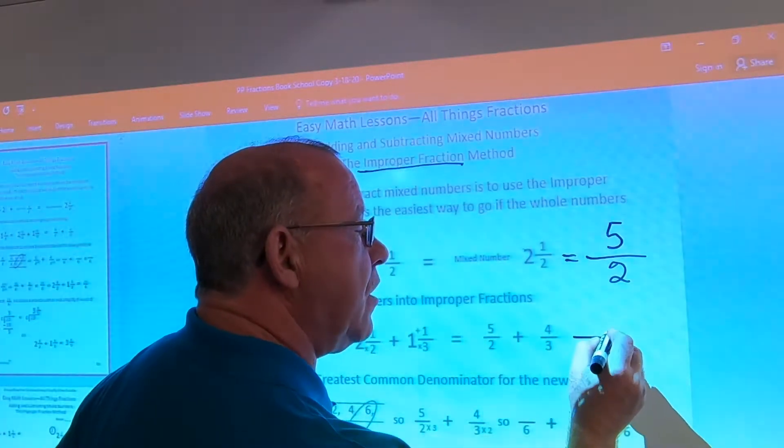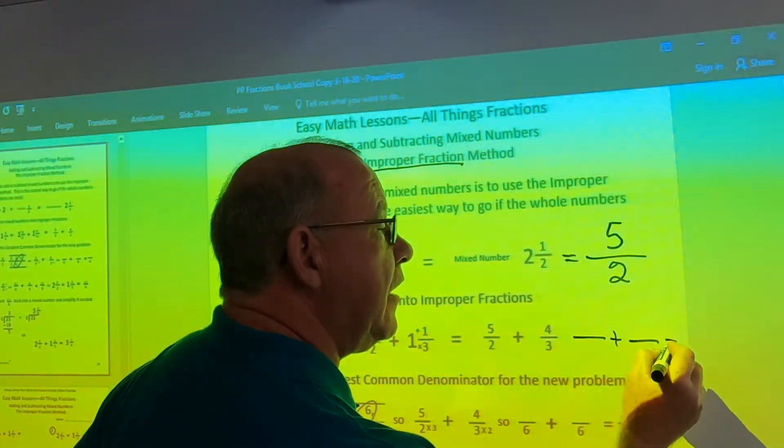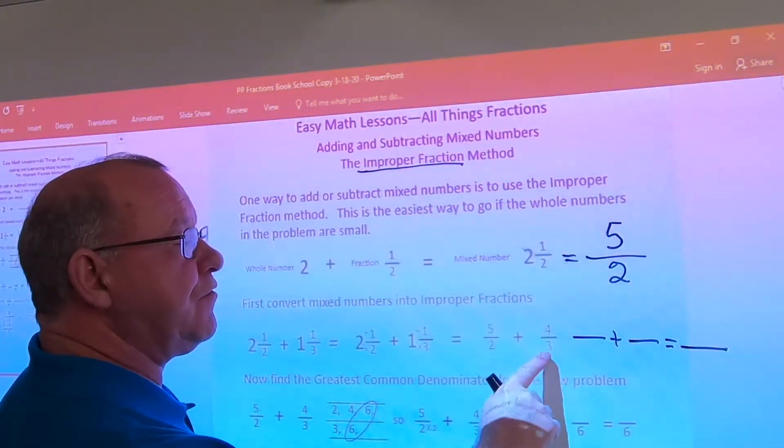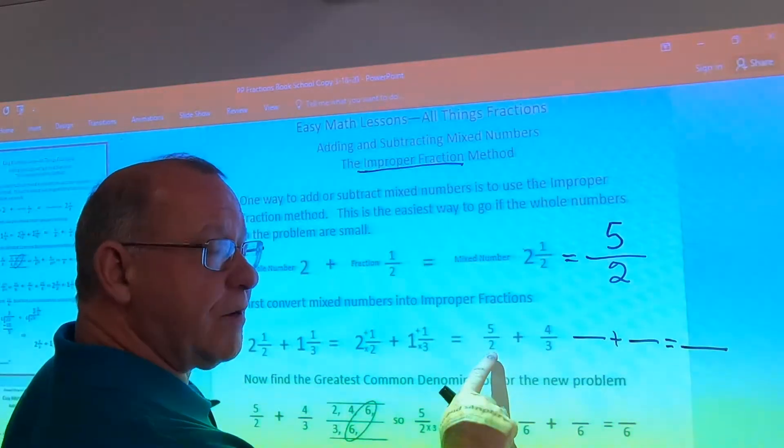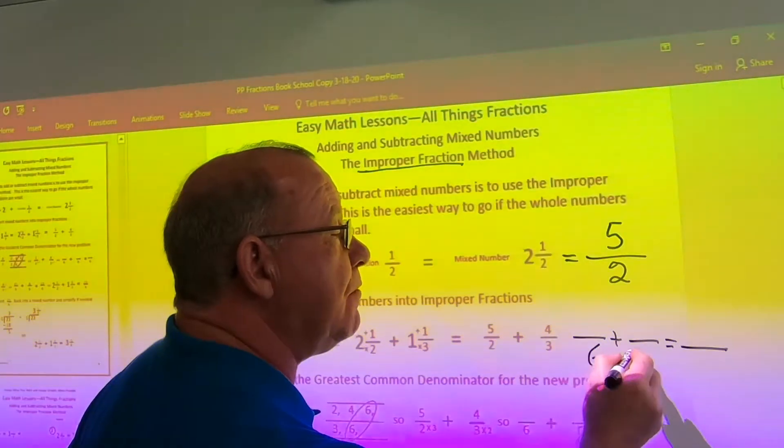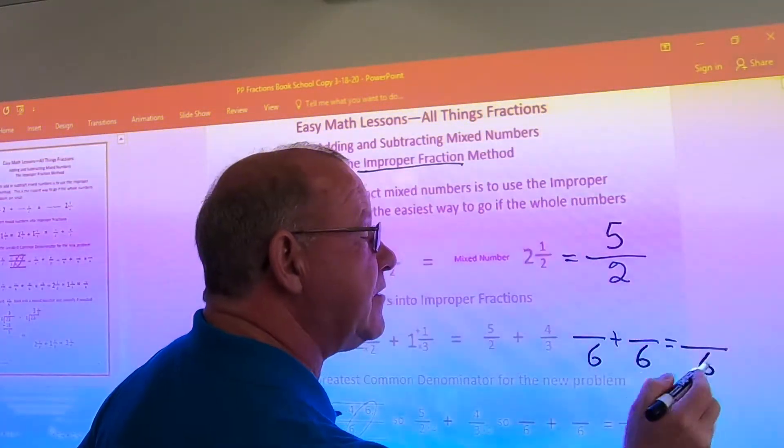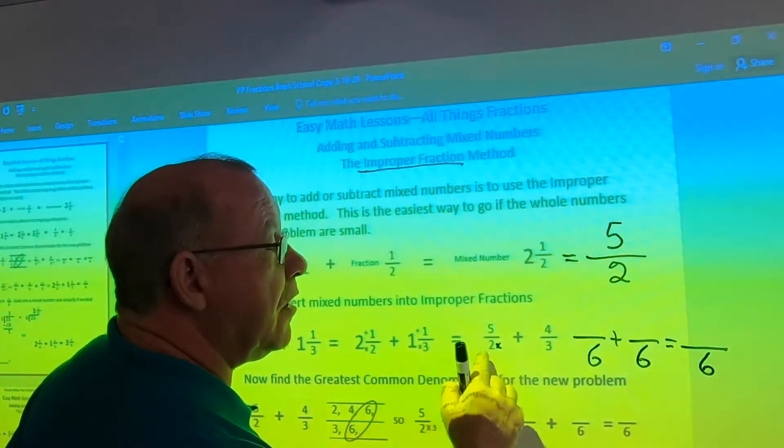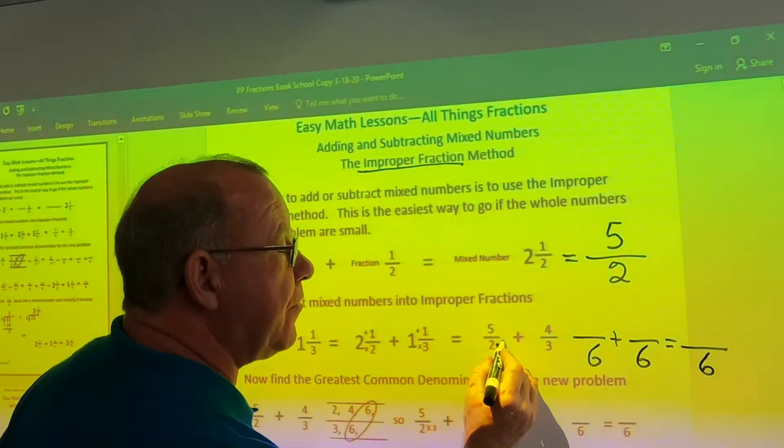I'm going to put a fraction bar plus a fraction bar equals a fraction bar. I need my greatest common denominator, which is my LCM of two and three. The first place if I was multiplying twos and threes that they would match would be at six. I'm going to put six in all three places. Now, all I have to do is multiply the two, to make it a six, I would have to multiply it by three.